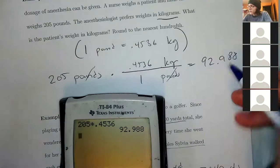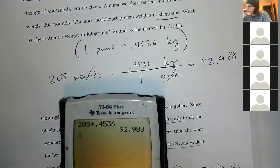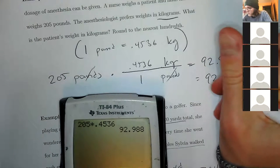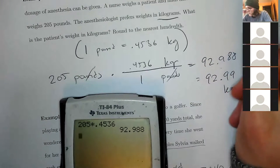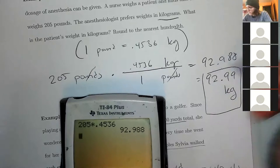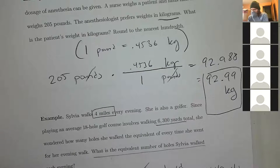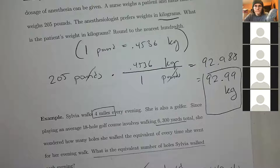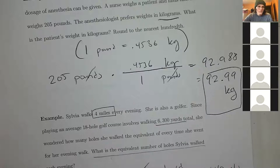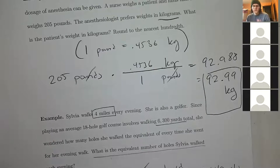It wants the answer to the nearest hundredth — tenths, hundredths, thousandths — so this is 92.99. I don't usually tell you how to round, but it's good to know. Any questions? All right, we have 17 people now; let me take a picture for attendance.